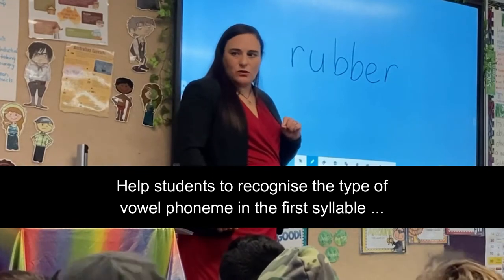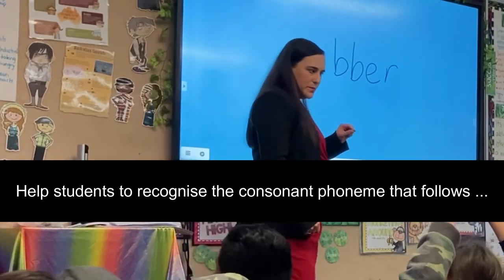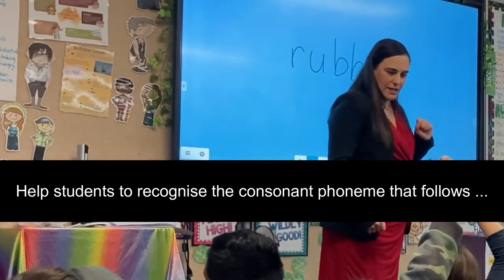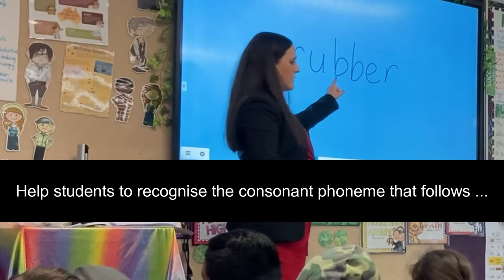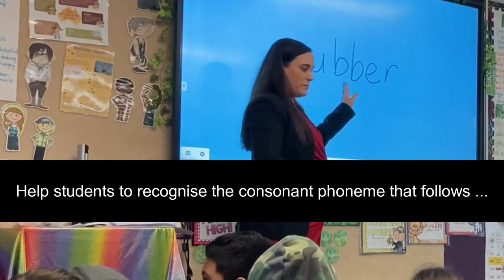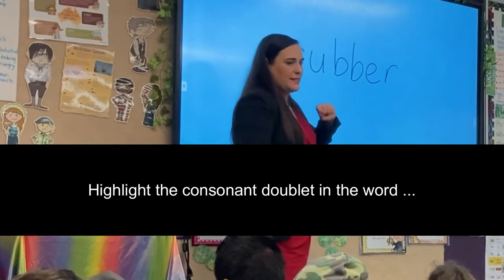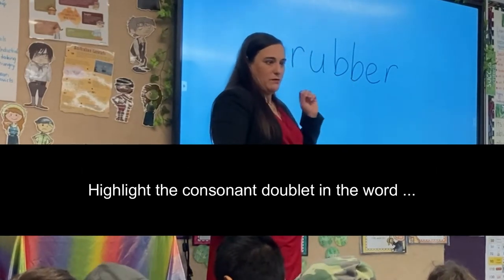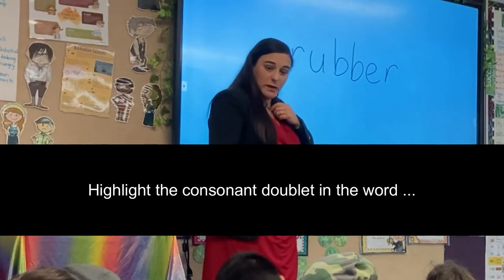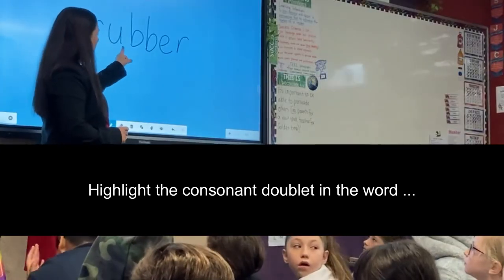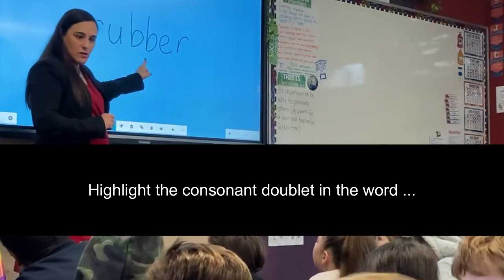And then what comes after that short vowel sound? What can you hear? So first we hear 'up' and then we hear... And in the word rubber, what two letters can you see that represent that phoneme? There's two B's. So we have a short vowel and then I can hear one consonant sound, but we write it with two letters.